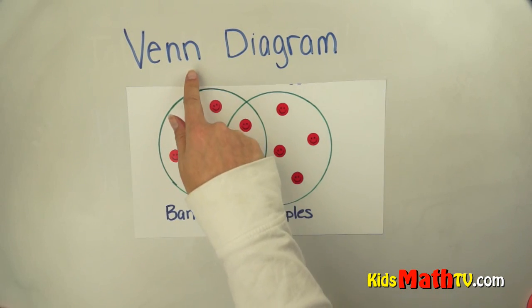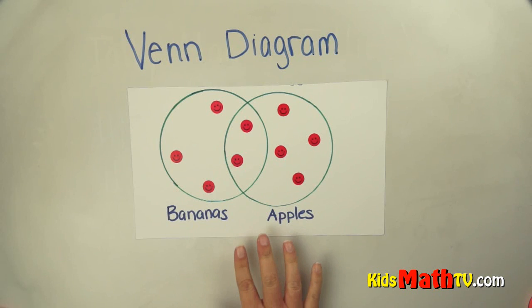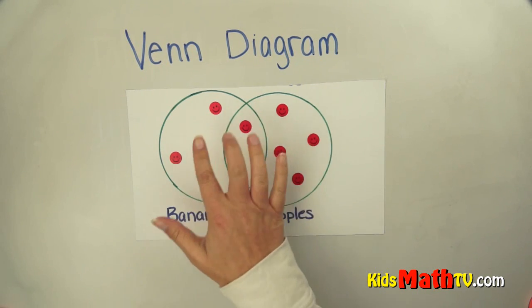In this lesson you are going to learn about how to read a Venn diagram. This is a diagram that shows us some information. In this case it is information about the types of fruits that some people like.